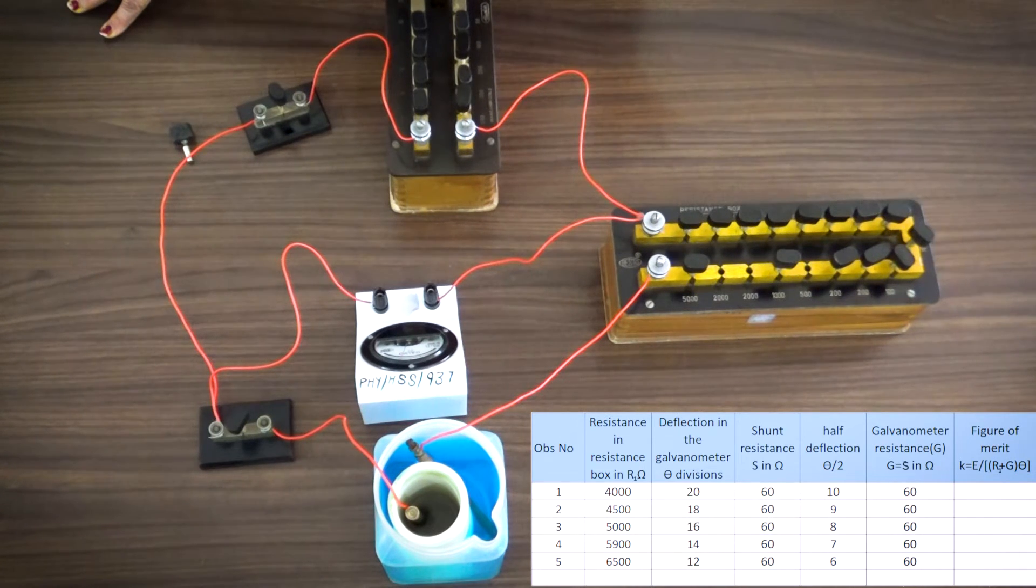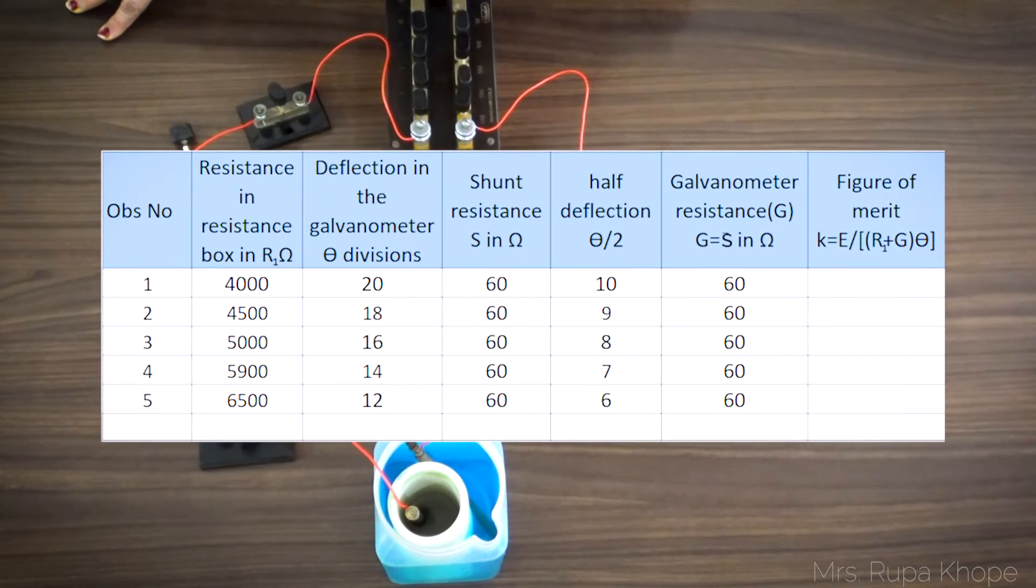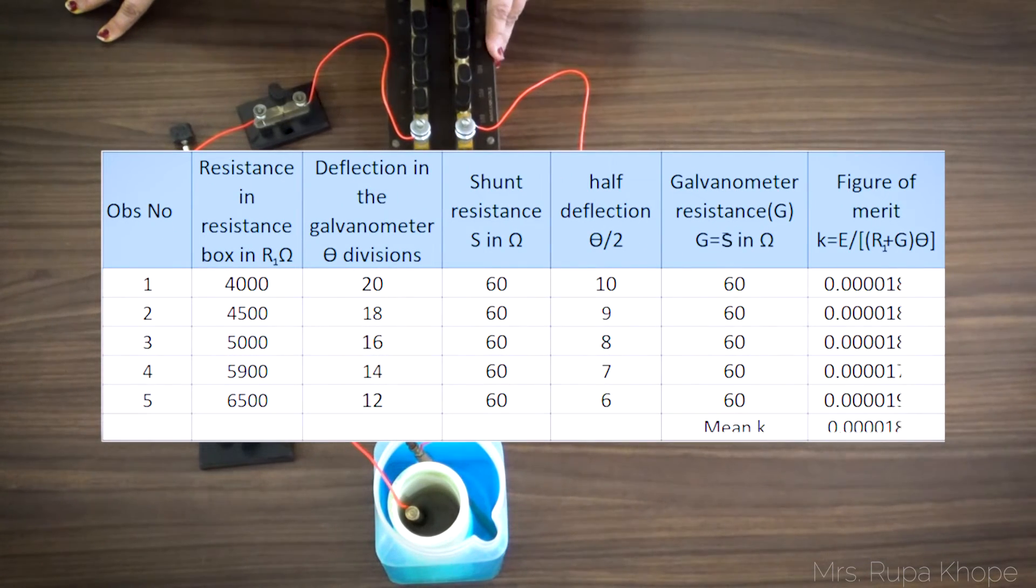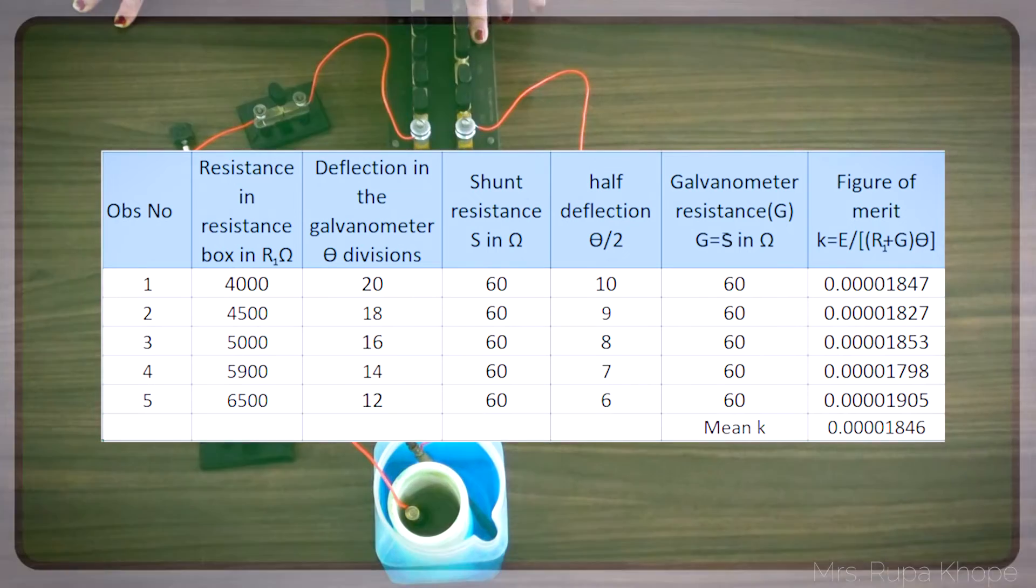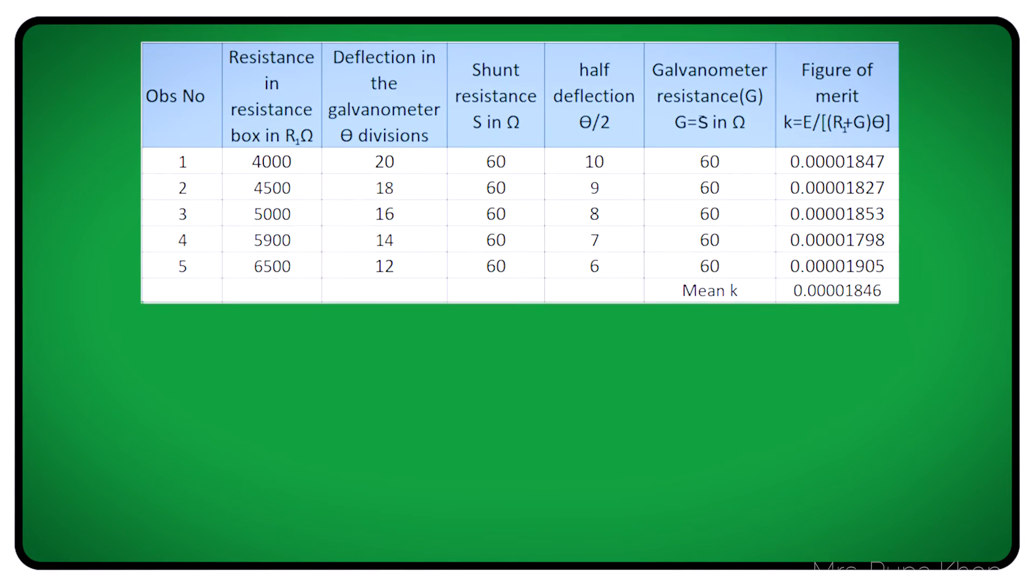And then let us calculate. Now we found out the resistance of the galvanometer, it is 60 ohms. And then we will do the calculations for figure of merit as per the observation table. So now we have already taken the readings. And we got the resistance of the galvanometer is 60 ohms. And then we are finding figure of merit. You know the formula K is equal to E upon R plus G into theta.